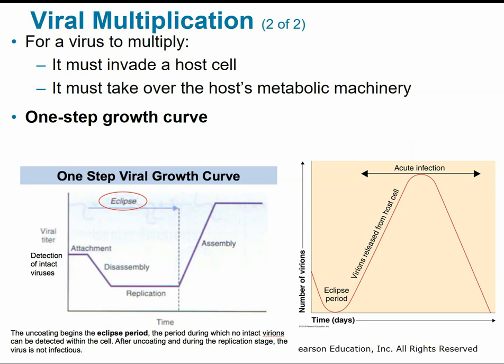For a virus to multiply, it must invade the host cell and take over the host's metabolic machinery — they hijack the host cell and use its ribosomes and enzymes to make new viruses. A single virion can give rise to several or thousands of similar viruses from a single host cell. This process can drastically change the host cell and usually causes its death, though in a few infections the host cell can survive and continue producing viruses indefinitely.